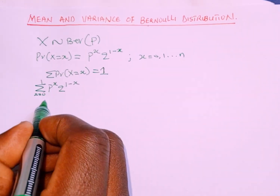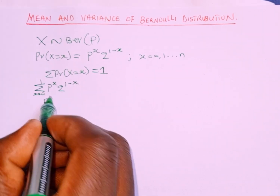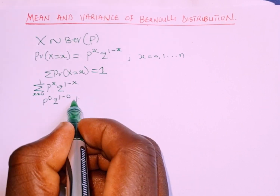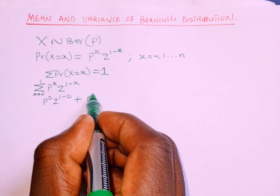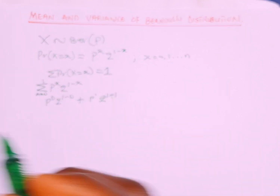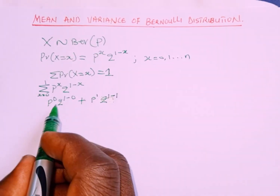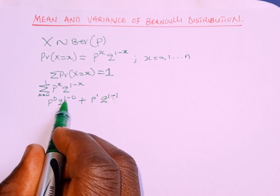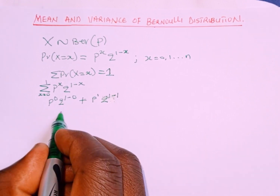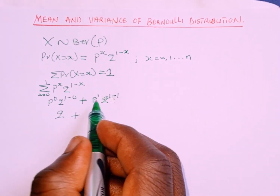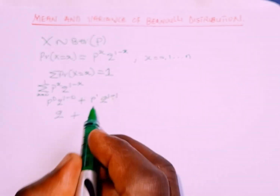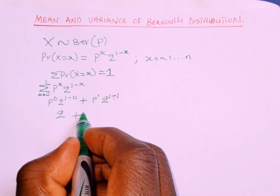The function gives: p to the power 0 times q raised to the power of 1 minus 0, then plus at x equals 1: p to the power of 1 times q raised to the power of 1 minus 1. Now p raised to the power of 0 is 1, and q raised to the power of 1 minus 0 equals q. Then p to the power 1 is p, and q raised to the power of 1 minus 1 is q^0, which equals 1, so that term is p.